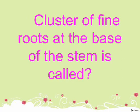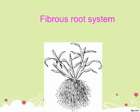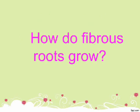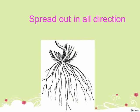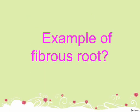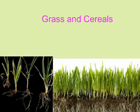A cluster of fine roots at the base of the stem is called the fibrous root system. How do fibrous roots grow? Fibrous roots spread out in all directions. Examples of fibrous roots include grass and cereals.